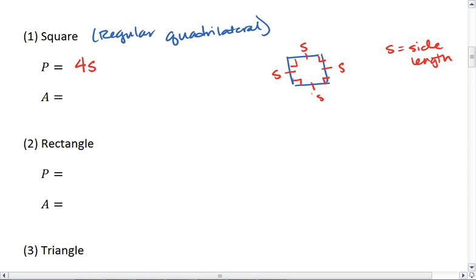Its area is going to be s times s, because we'll be able to fit s number of boxes across one row, and we'll have s number of rows of boxes, which is s squared. So perimeter is 4s, which is s plus s plus s plus s, and area is s squared, or s times s.